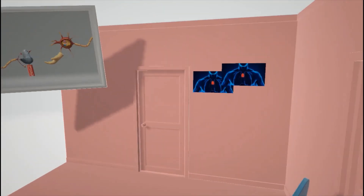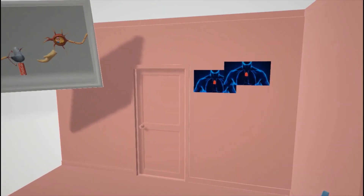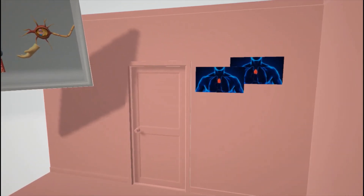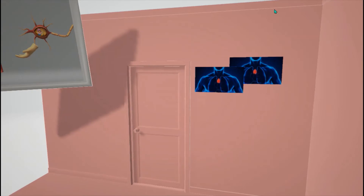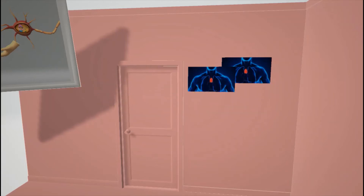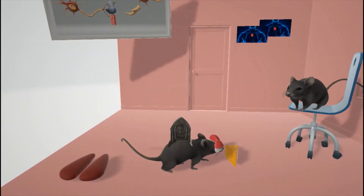The doctor asked him to look at a picture of the thymus on the wall, and he had double vision — he saw two of them — to help us remember the double vision seen in myasthenia gravis. We chose the thymus specifically because myasthenia gravis is associated with thymic hyperplasia and thymoma.